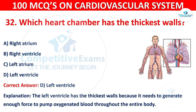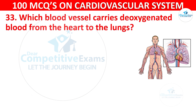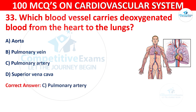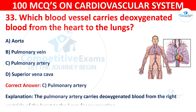Question 33: Which blood vessel carries deoxygenated blood from the heart to the lungs? Options are: Aorta, Pulmonary vein, Pulmonary artery, or Superior vena cava. The correct answer is C, Pulmonary artery. The pulmonary artery carries deoxygenated blood from the right ventricle of the heart to the lungs for oxygenation.